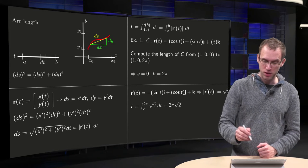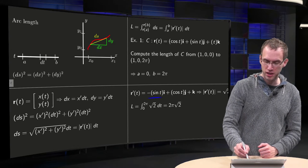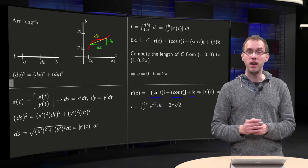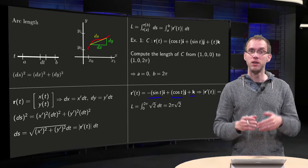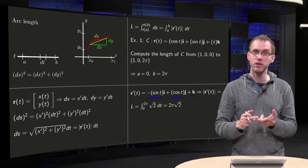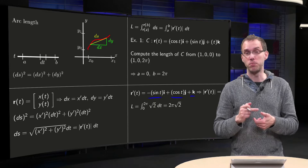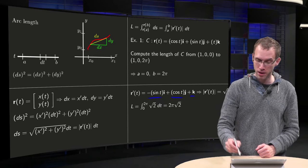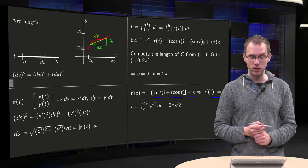Then we compute r prime: minus sine t in the i direction plus cosine t in the j direction plus 1 times k. And then we compute its length. Well, the length of r prime squared equals sine squared plus cosine squared plus 1. So, sine squared plus cosine squared equals 1. So the length of r prime squared equals 1 plus 1 equals 2. So the length of r prime is just square root of 2.